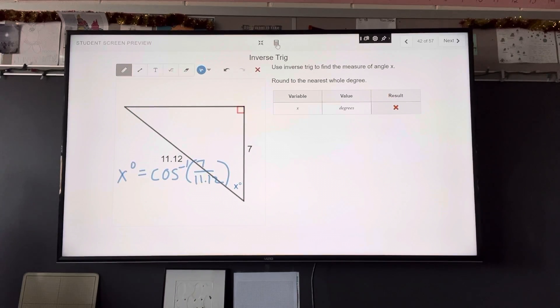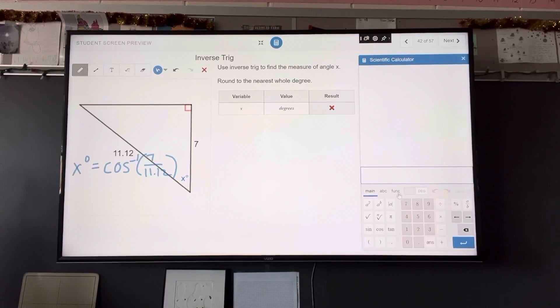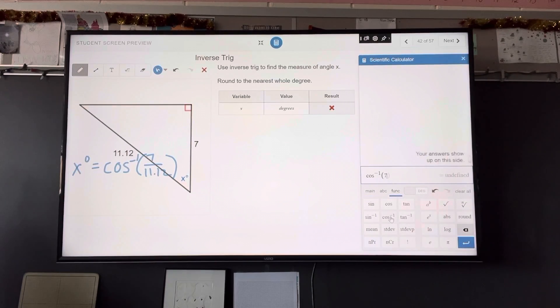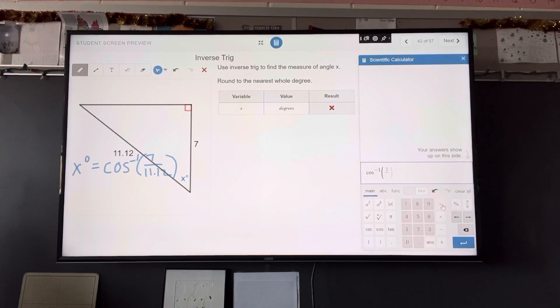Calculator. The inverse cosine, you're going to have to go to the functions button and select cosine of the negative one. Seven divided by 11.12. This particular problem is asking you to round to the nearest degree. So that's going to be 51 degrees. How are we doing?